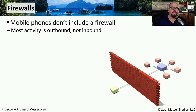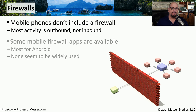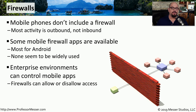When we think about security, we very often think of a firewall, but most mobile phones don't include any type of firewall capability. Most of the activity on a mobile device initiates on the device itself, so all of this is outbound traffic. There aren't any services running on the mobile device that anyone would need to access from the outside. There are a number of third-party applications you can install on both iOS and Android, but very few seem to be mainstream. Where you see a lot of firewalling occur for mobile devices is in the enterprise, where you can filter what mobile applications can go through your enterprise firewall and thereby protect the mobile devices inside your company.